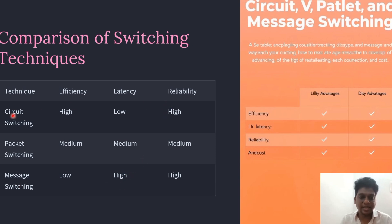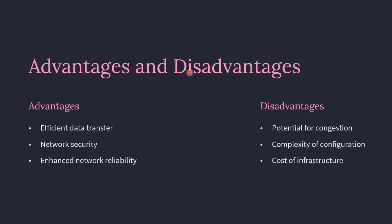Comparing advantages and disadvantages of all methods: advantages include efficient data transmission between sender and receiver, prevention of unauthorized data, and enhanced network reliability. Some drawbacks include that switching can sometimes cause congestion and complexity in the network. In some switching techniques, such as circuit switching and packet switching, the cost of infrastructure is somewhat high to implement.